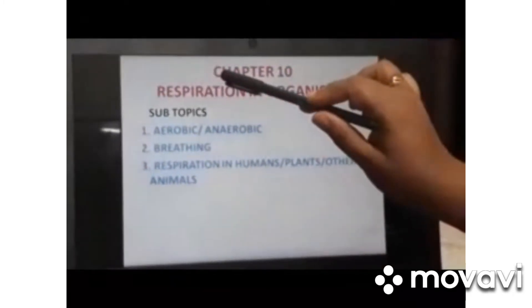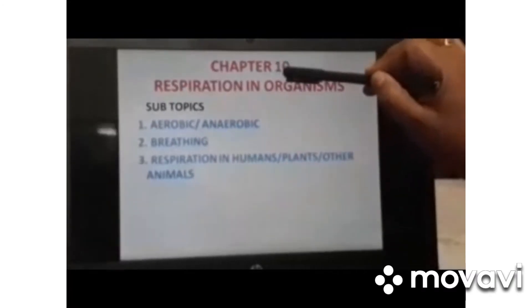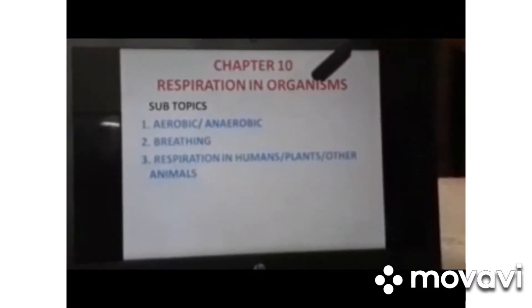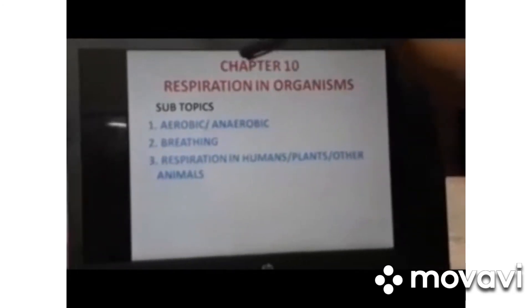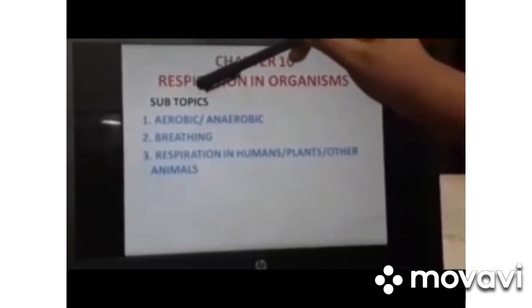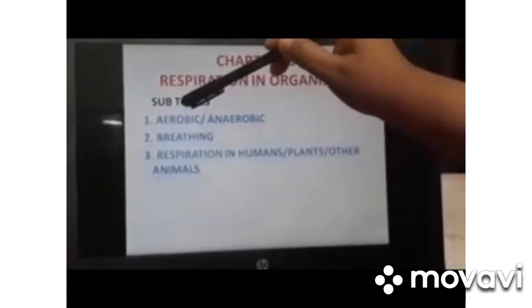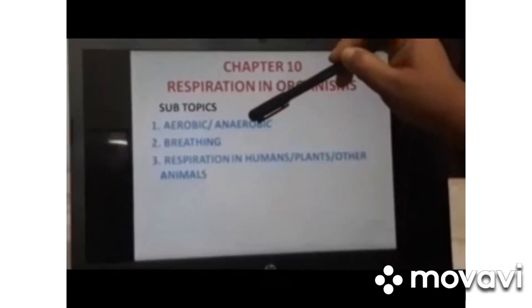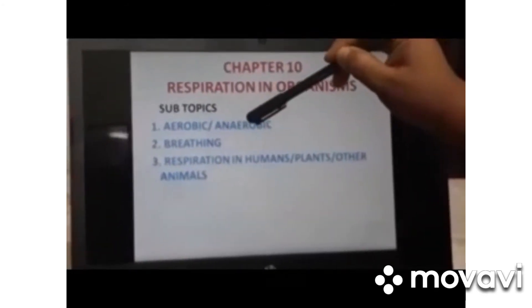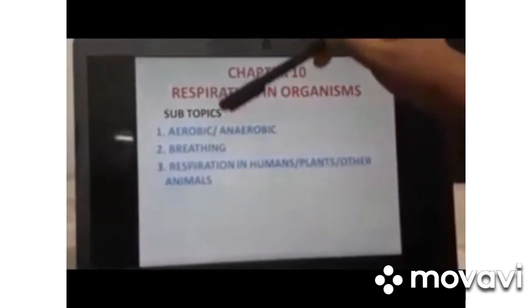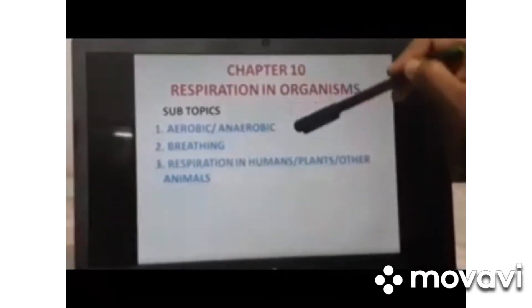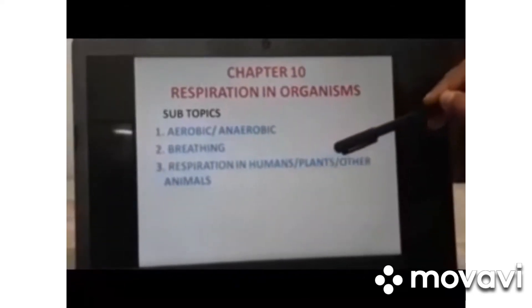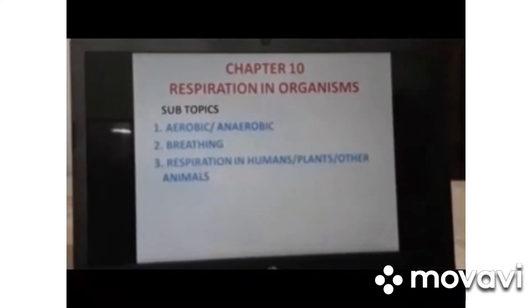Next we are moving to Chapter 10, that is Respiration in Organisms, under which we will deal with the difference between aerobic and anaerobic respiration, breathing, respiration in humans, respiration in plants and other animals.